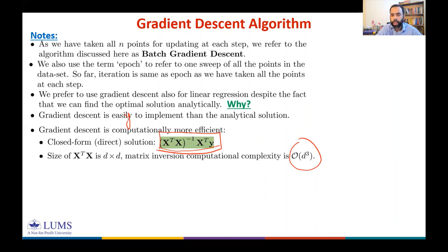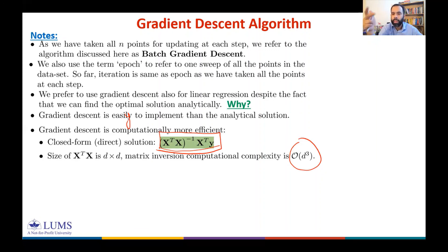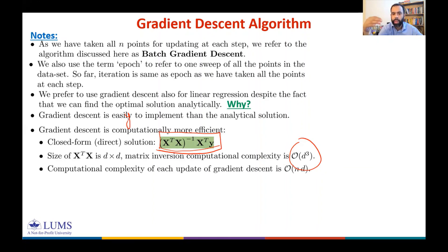What is the complexity of gradient descent? At each step we compute partial derivatives. With batch gradient descent we take all n samples and have d features, so the computational complexity of each gradient update is O(n · d).